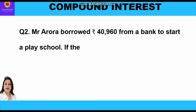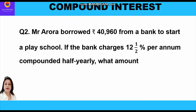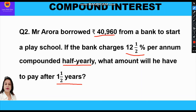Now let's take the second question: Mr. Arora borrowed ₹40,000,960 from a bank to start a play school. The bank charges 12½% per annum compounded half yearly. What amount will he have to pay after one and a half years? Principal is ₹40,000,960, rate is 12½% per annum compounded half yearly, and time is 1½ years.